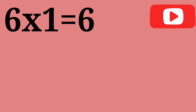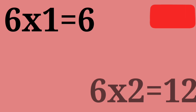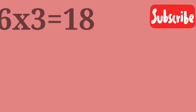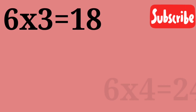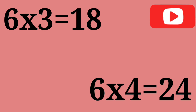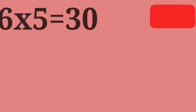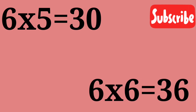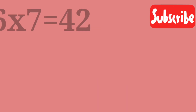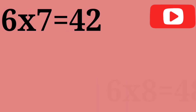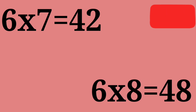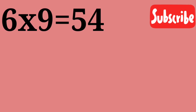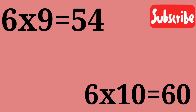6 ones are 6. 6 twos are 12. 6 threes are 18. 6 fours are 24. 6 fives are 30. 6 sixes are 36. 6 sevens are 42. 6 eights are 48. 6 nines are 54. 6 tens are 60.